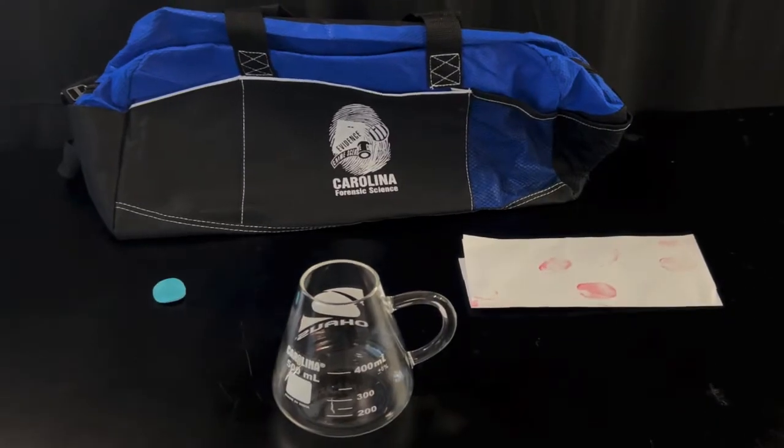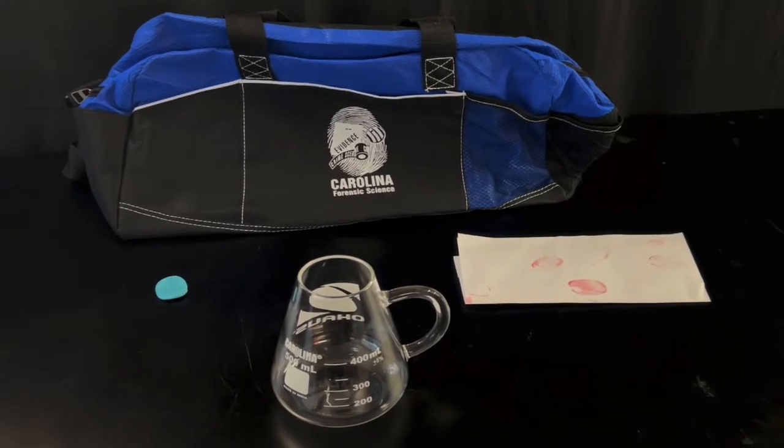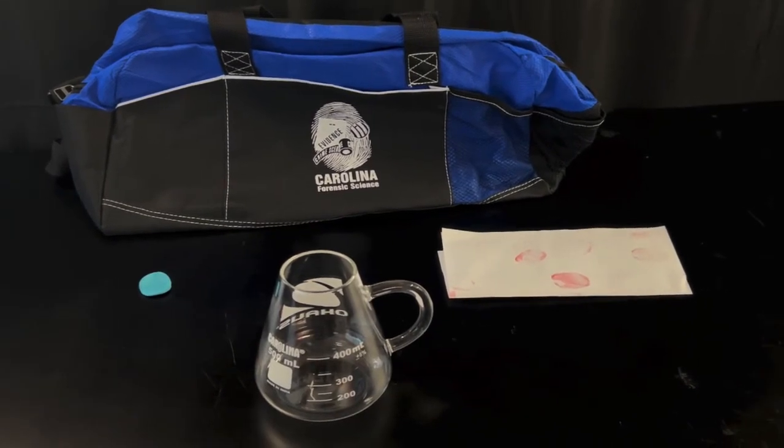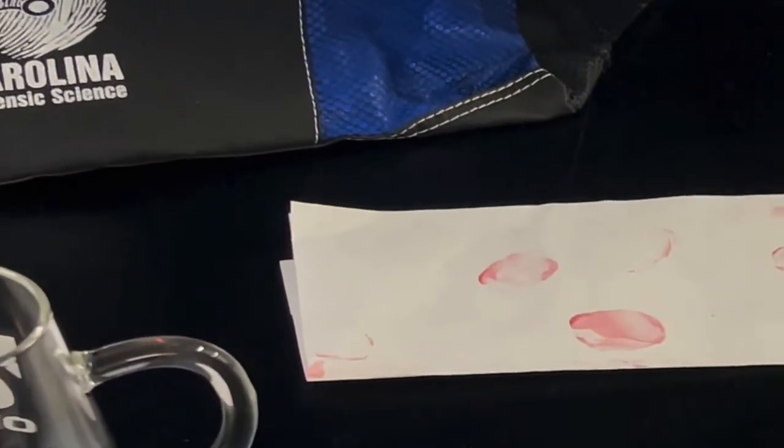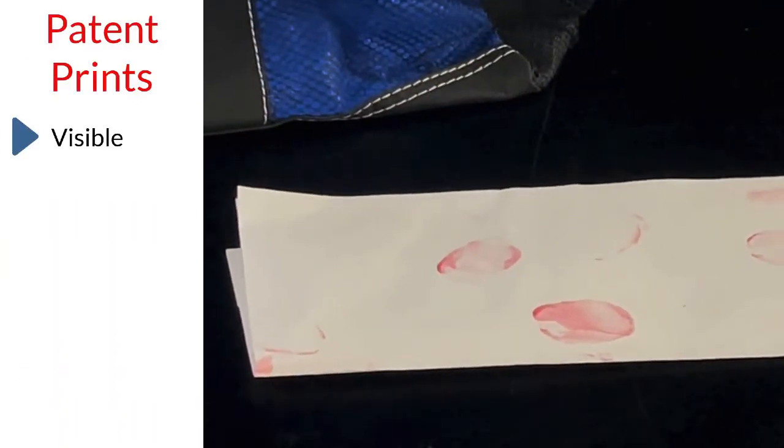There are three major types of fingerprints. Each type is identified by its visibility and the material the print is made in. We will first look at patent prints. Patent prints are visible prints formed in a material such as ink, paint, or blood as shown in this example.